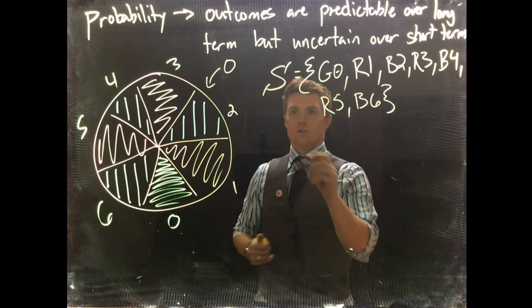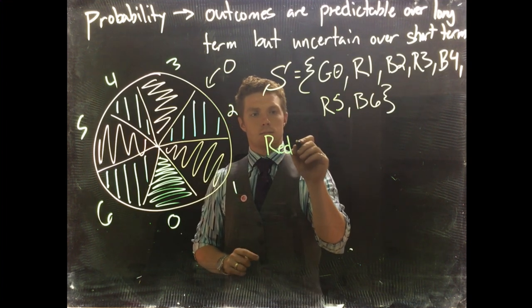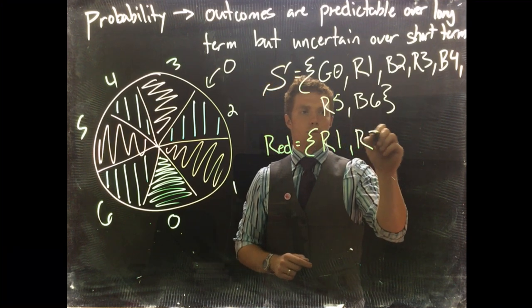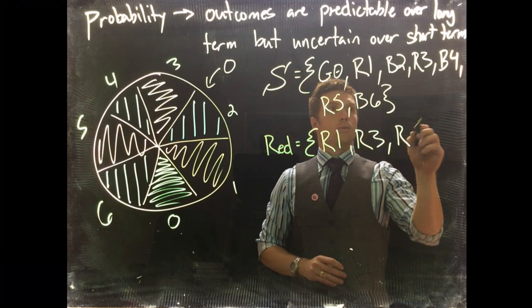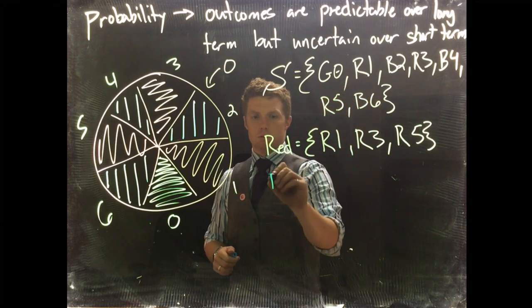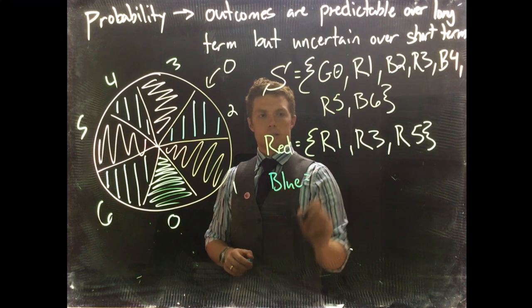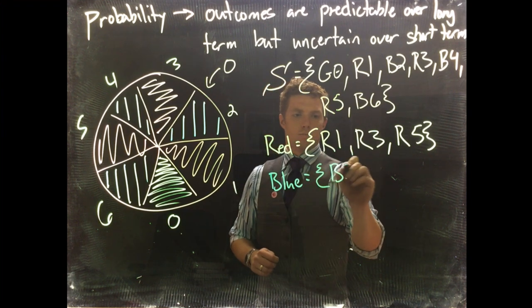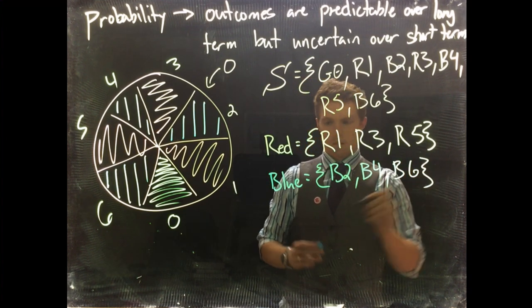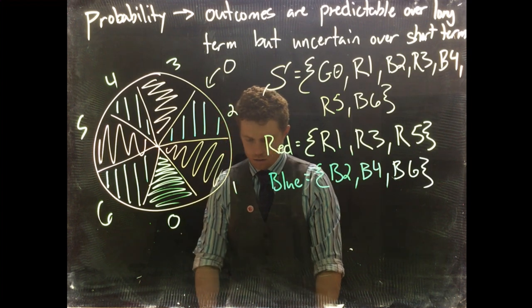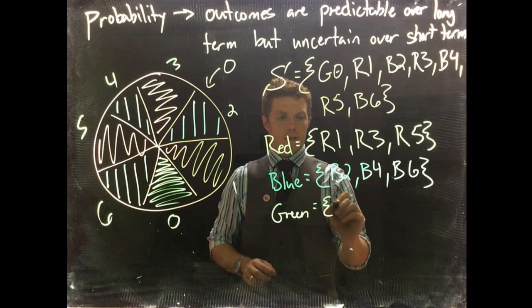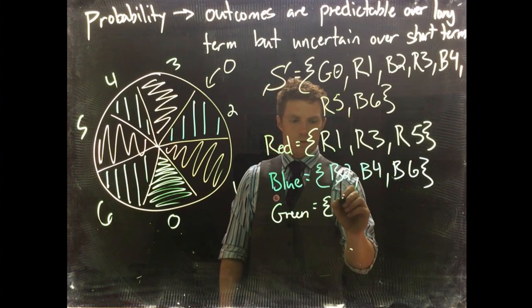So we can make a bet for red, blue, or green on our table. So let's do the event for red. Red, so we would have red one, red three, and red five. That's the event for red. The event for blue is going to equal blue two, blue four, blue six. And then for green, we're going to have the event of green zero.